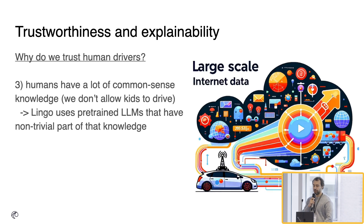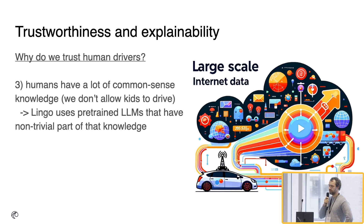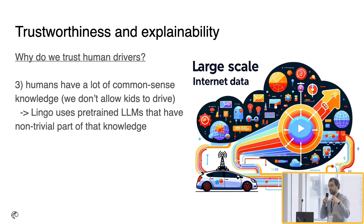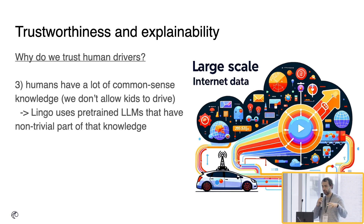But why do we trust humans though? One reason is that we all share common sense knowledge. For example, we don't allow kids to drive just because of that — because kids haven't got this level of knowledge that we all share. This is similar to the fact that we need a lot of edge cases. When we actually train VLMs, we take advantage of large internet-scale data that we put into these VLMs, hence covering for that common sense aspect of the models.